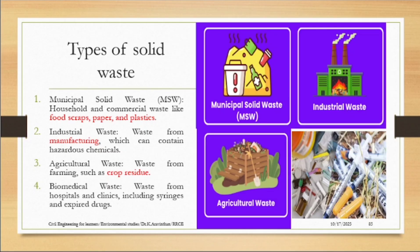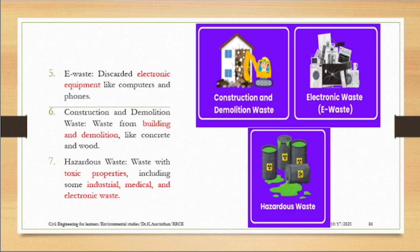All waste consisting of syringes and expired drugs must be handled properly. In this generation, e-waste is growing — these are electronic waste components from computers and phones. Construction is another parameter; enough experiments have been done. If any building is constructed and then demolished — not only buildings but also roads — roads are constantly being relaid every three to five years.